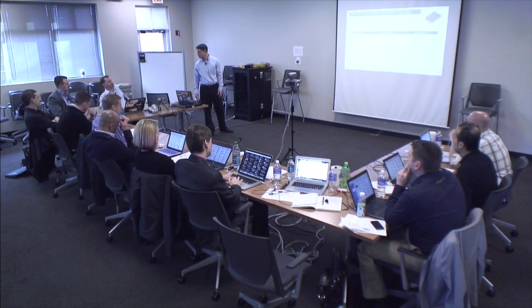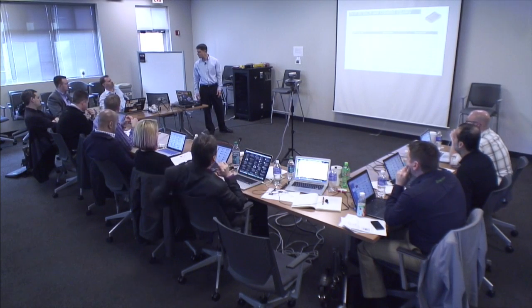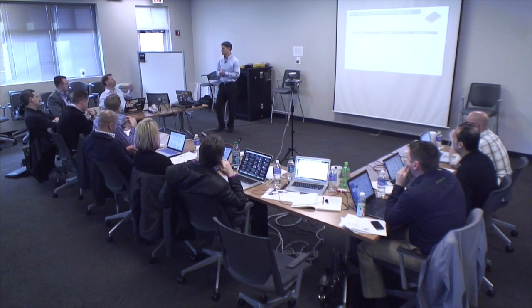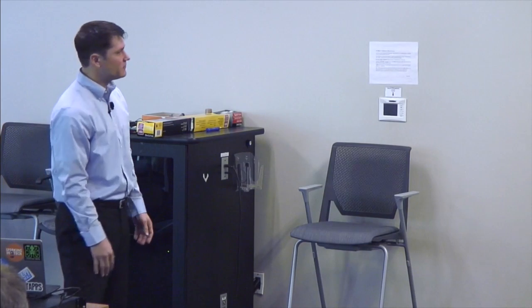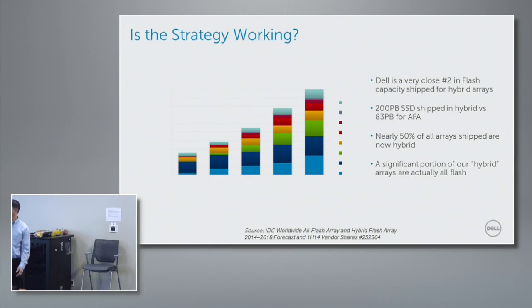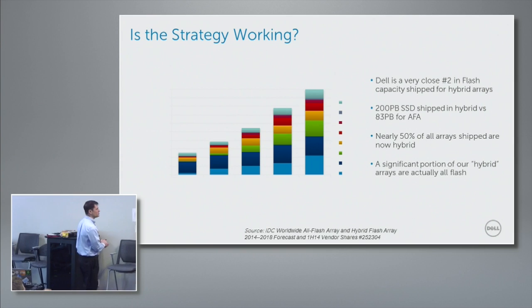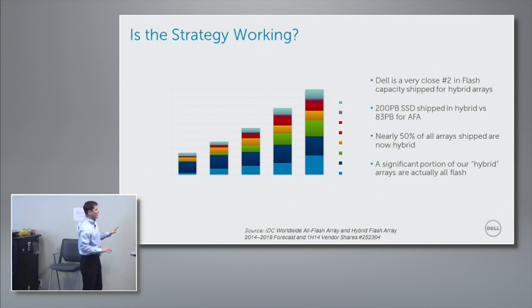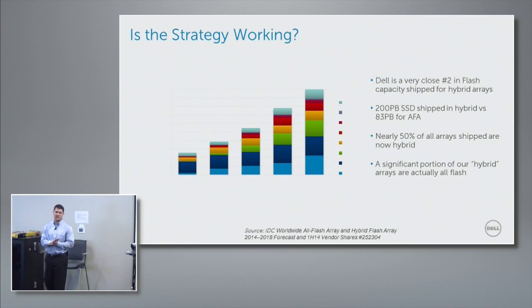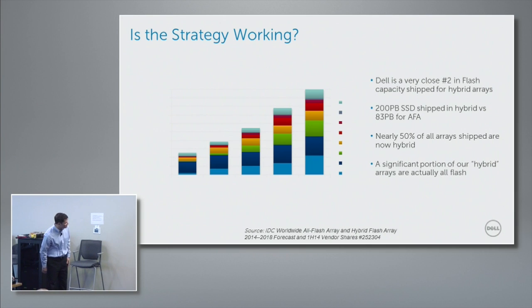On the marketing question of how we count capacity shipped — when we say we shipped X, do we count what's in the drive or the usable capacity? We do it both ways, depending on how the question is asked. The data from IDC shows flash capacity shipped for hybrid arrays, though the formatting on that slide got lost.